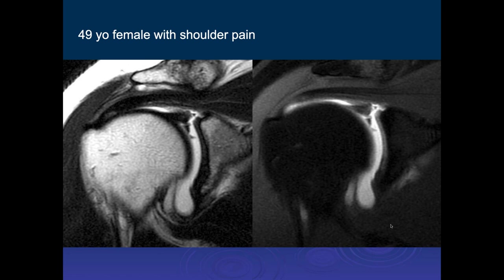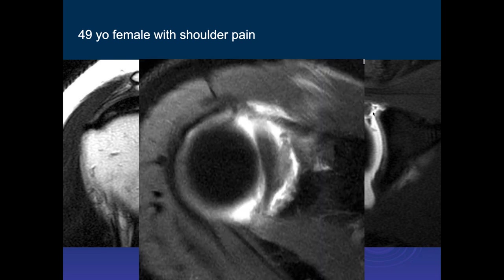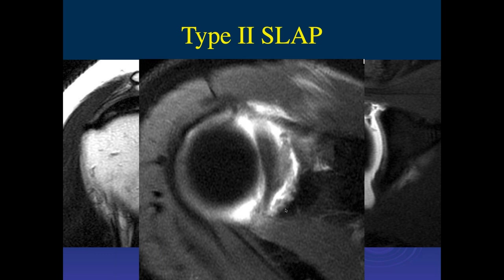In this 49-year-old female with shoulder pain, we see a tear of the biceps anchor and superior labrum — a SLAP tear with some degeneration. The biceps anchor was pulled off a little bit. Following the cuts, we see the tear with the biceps coming across, the biceps anchor visible, and just a little posterior part still attached. This demonstrates the peel-back mechanism — peeling from front to back with the back still slightly in place. This was a large Type 2 SLAP tear.